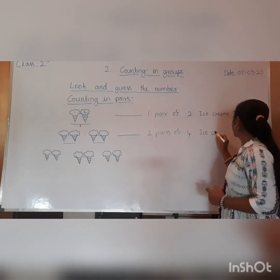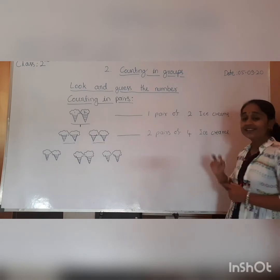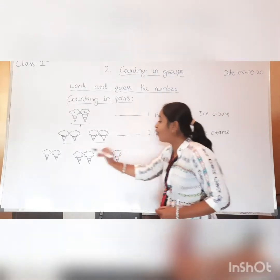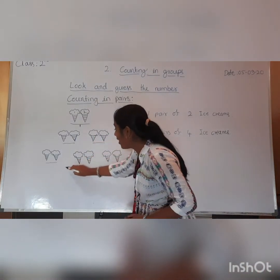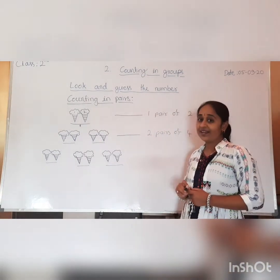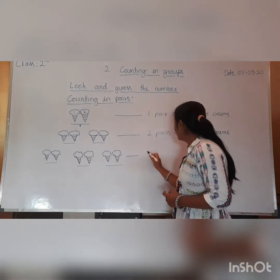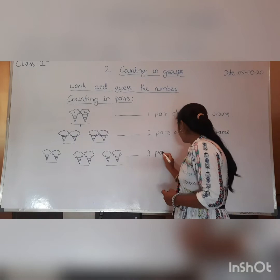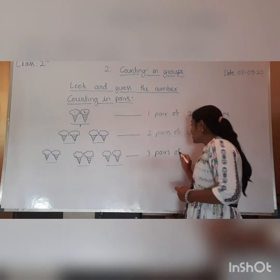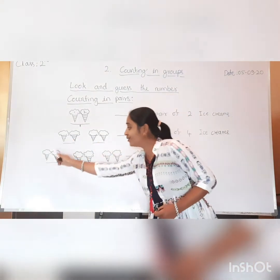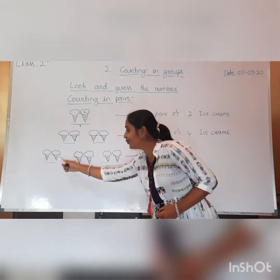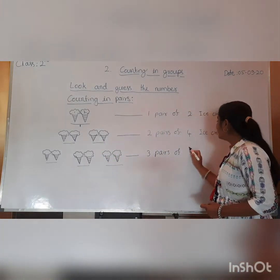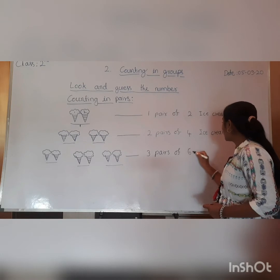Three pairs. Students, look here. In the third row, how many ice creams are there? One, two, three. Total, three pairs are there in the third row. Three pairs of how many ice creams? Six ice creams. Count: one, two, three, four, five, six. Three pairs of six ice creams.